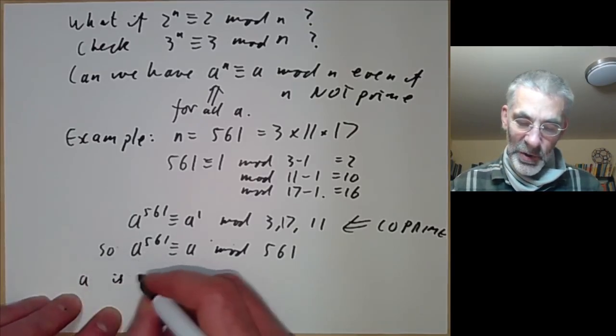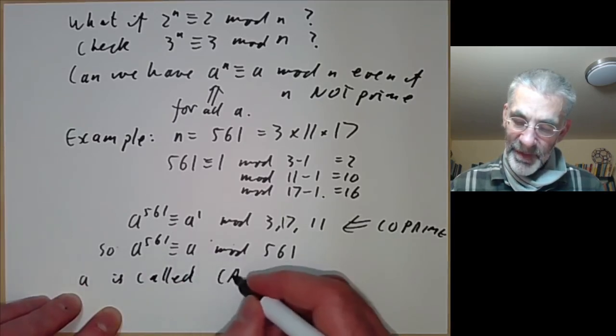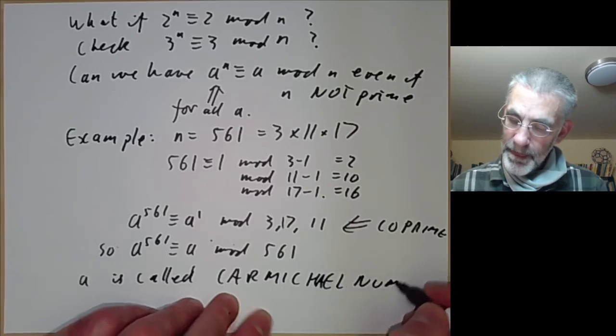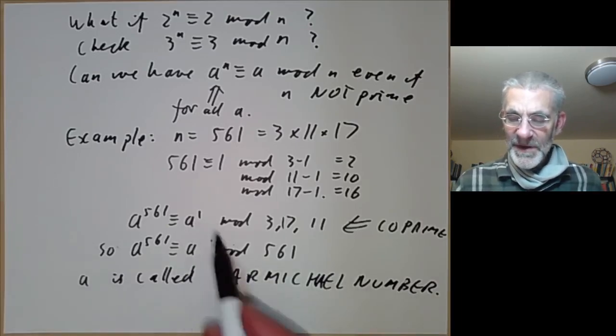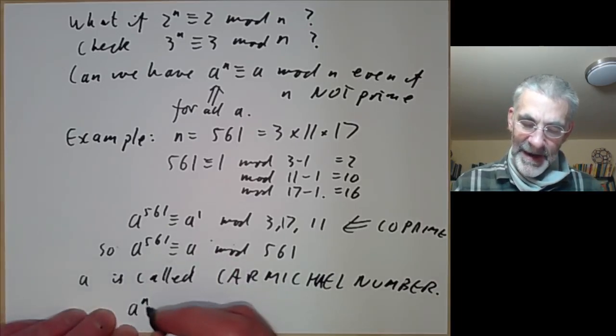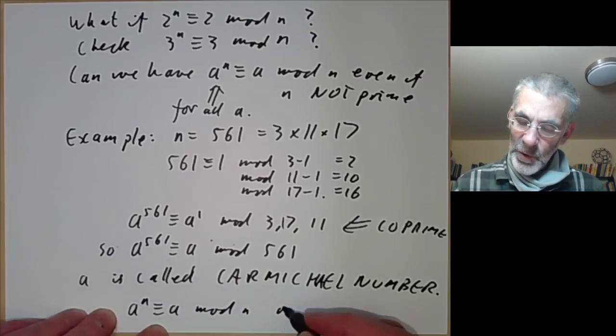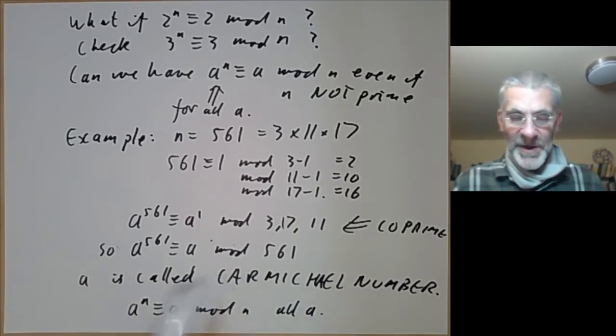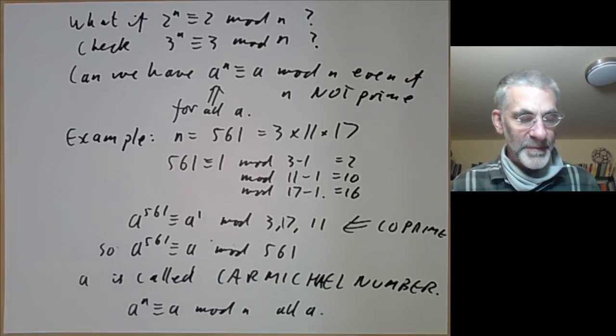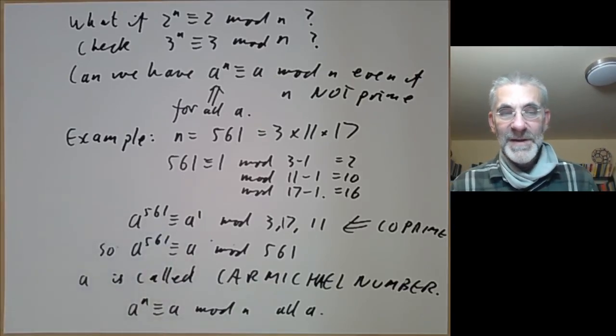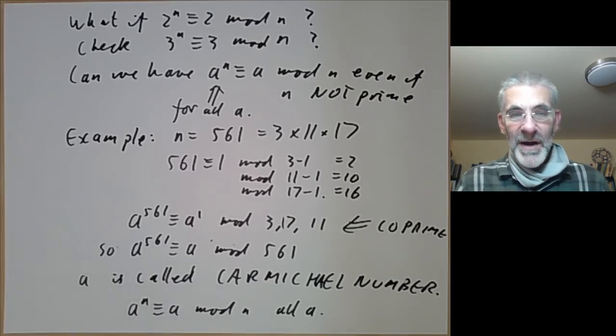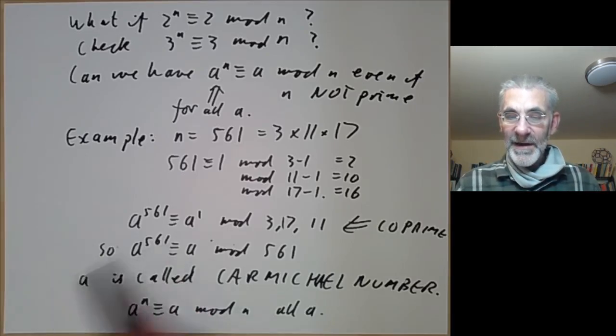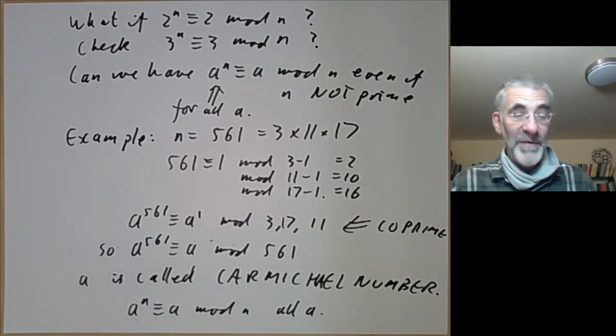So this number is called a Carmichael number. And Carmichael numbers are numbers with this funny property that a to the n is congruent to a mod n for all a. And they're quite rare, but there are an infinite number of them. So we don't actually get a perfect primality test. The primality test we gave using Fermat's theorem is actually a very crude one. It's the simplest possible thing we could do with Fermat's theorem. And there are actually several variations of it that are much less likely to suggest that a number is prime if it isn't really prime.